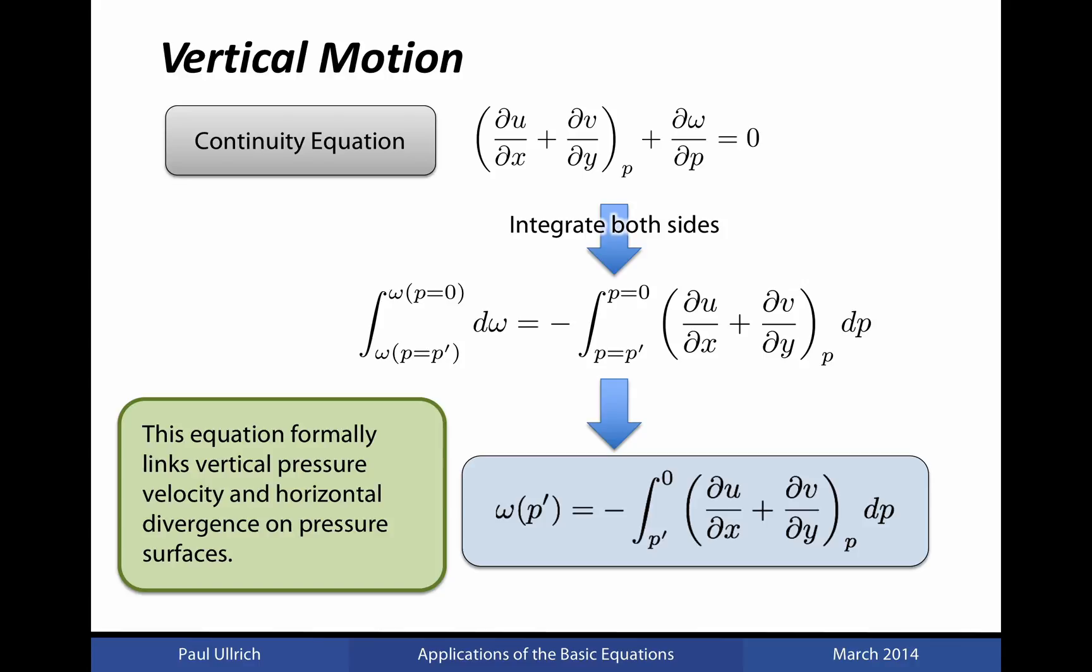However, the top of the atmosphere value of omega is effectively zero. It's more of an idealization in this approximation, and so it can be neglected from our expression. On the right-hand side of our integral, we have the vertical integral of the divergence of the flow.